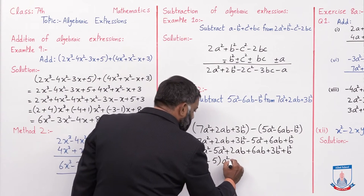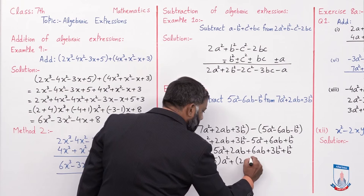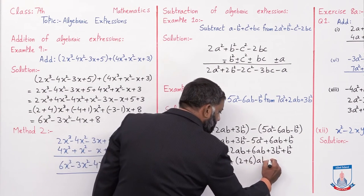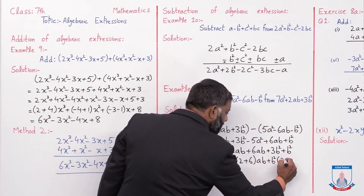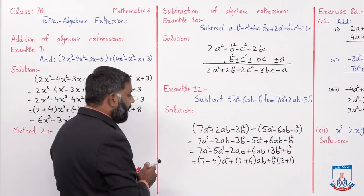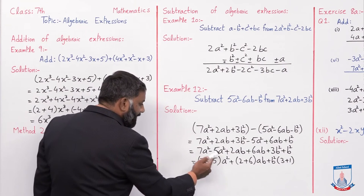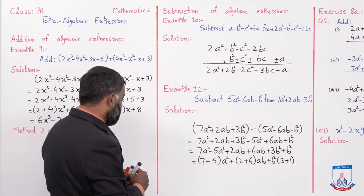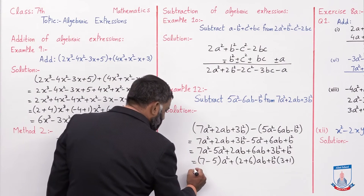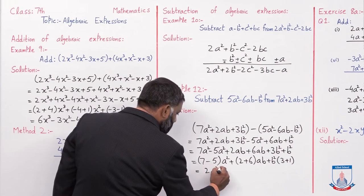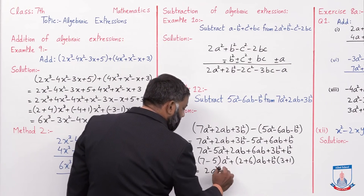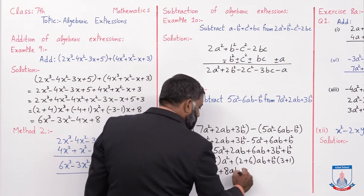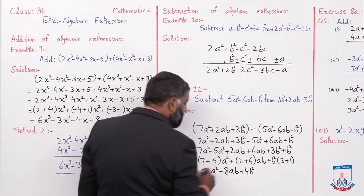Ab terms mein ab common aa gaya, remaining 2 + 6. Aur b² common aa gaya, remaining 3 + 1. To: 7 - 5 = 2a², 2 + 6 = 8ab, 3 + 1 = 4b². Final answer: 2a² + 8ab + 4b².